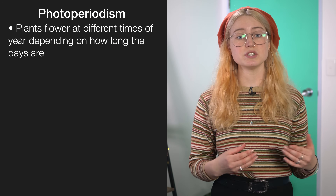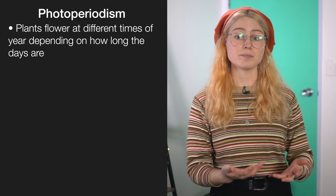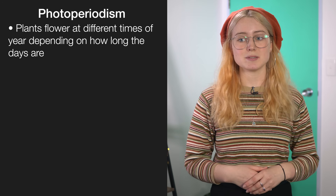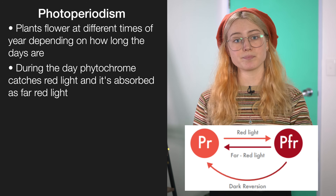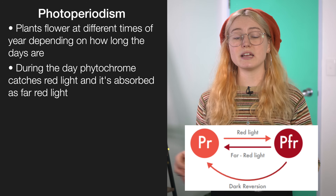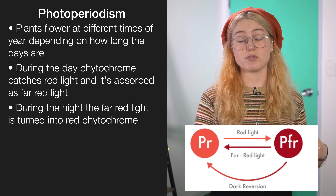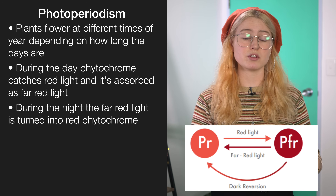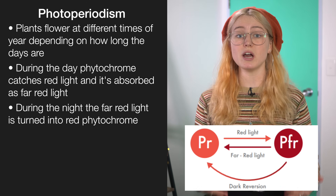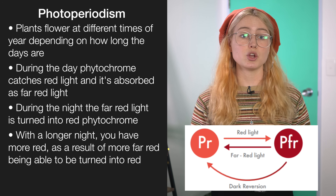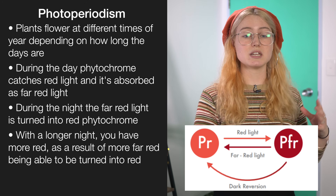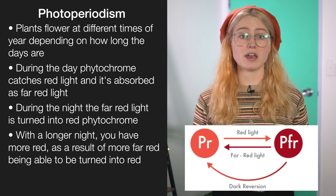Another tricky topic within this standard is photoperiodism and the two different phytochromes that control it. Plants flower at different times of year depending on how long the days are, and this is controlled by the two different types of phytochromes. During the day the plant catches red light and it's absorbed as far-red light. During the night, this far-red light is slowly and gradually converted back into red phytochrome. Importantly, the flowering of these plants is controlled by the length of nights as opposed to the days. With a long night, more far-red is converted back into red phytochrome, and this is how plants know what time of year to flower.